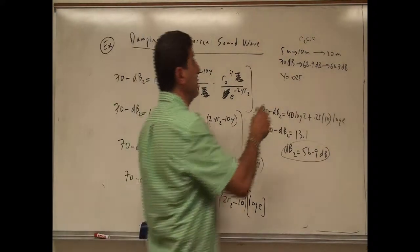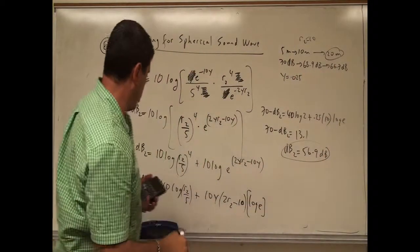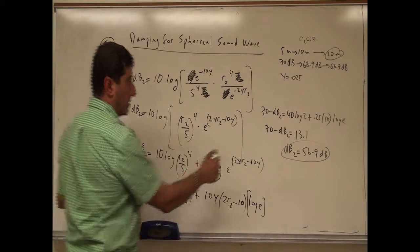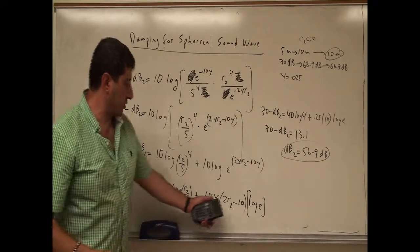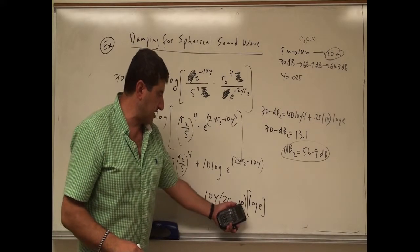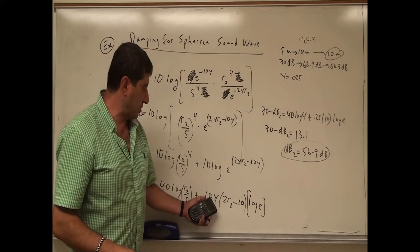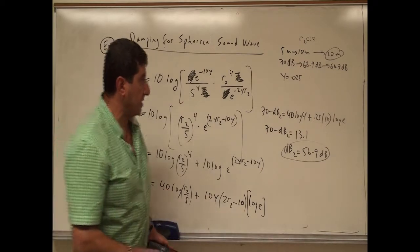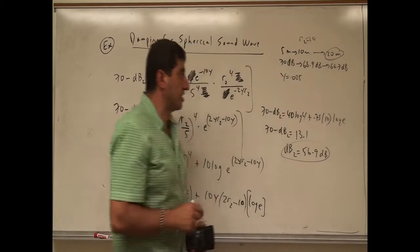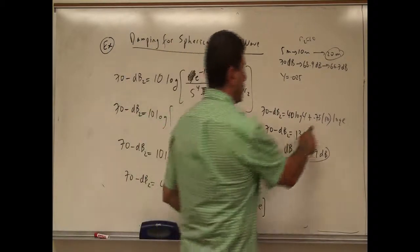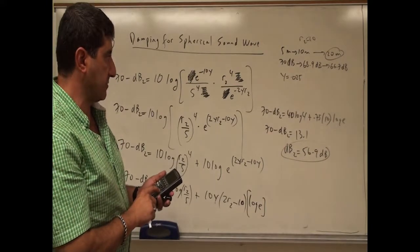What if you go to 20 meters? Then it's going to be a lot less than 66.7. So you're going to put here 20. You're going to add log of 4. And then if you put here 20, you're going to have 40 minus 10 is 30. 30 times 100 is going to be 300 times gamma. It's going to be, this one is going to be 0.75. So it's going to be 3 times more. So it's going to be 7.5 times log of E. So let's see what it comes out now.